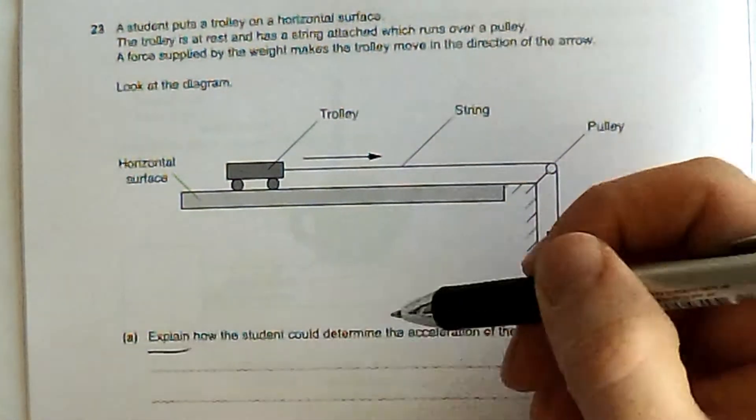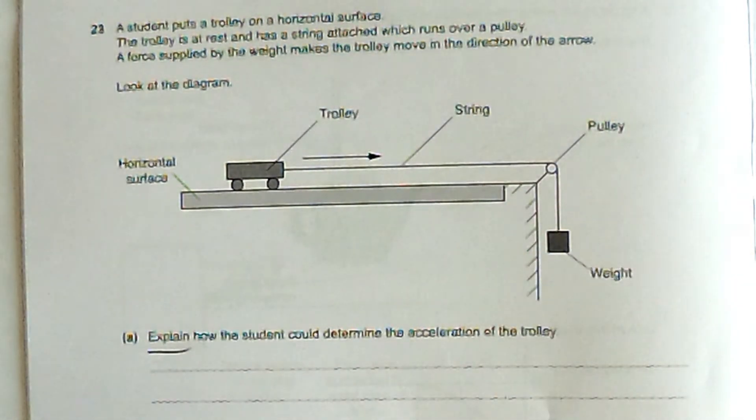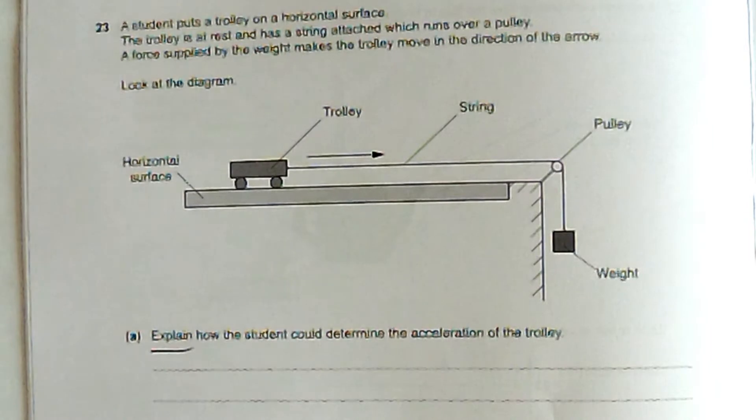Explain how the student could determine the acceleration of the trolley. So basically what would they need to measure, and how would they therefore get the acceleration from that? Well there's two ways to do this in fact.